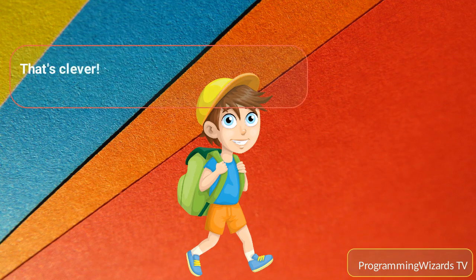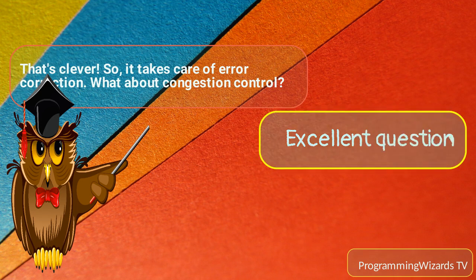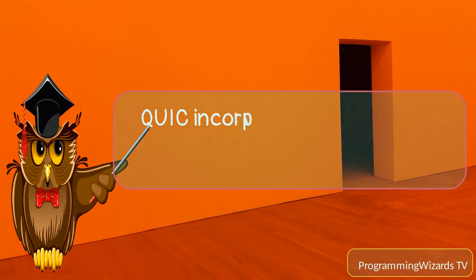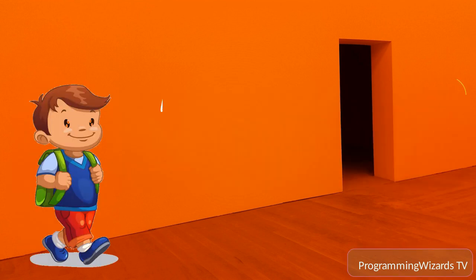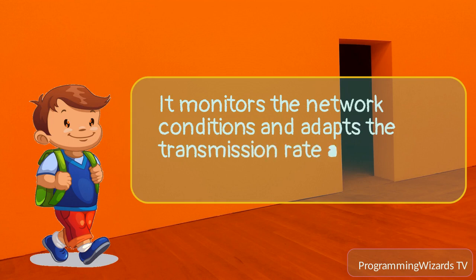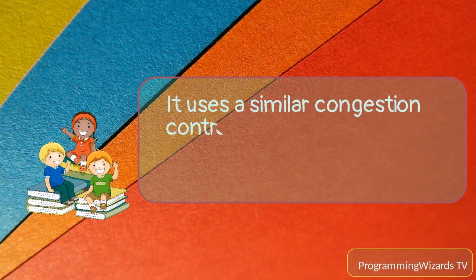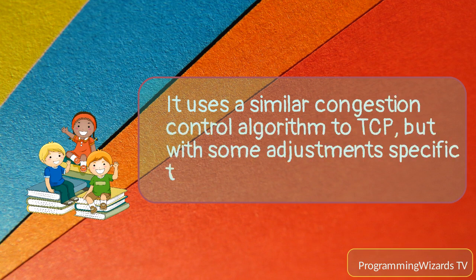That's clever. So it takes care of error correction. What about congestion control? Excellent question. QUIC incorporates its own congestion control mechanism as well. It monitors the network conditions and adapts the transmission rate accordingly to avoid network congestion. It uses a similar congestion control algorithm to TCP, but with some adjustments specific to the QUIC protocol.